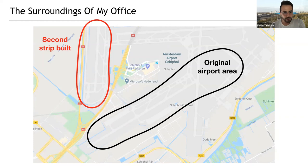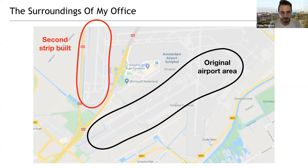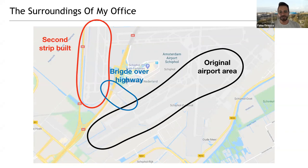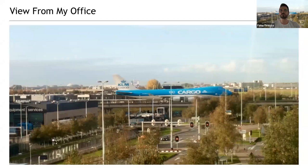So they built a second strip, highlighted in red. What's interesting is that between those two highlighted areas there is a highway called the A4. The highway was already there before the second strip was built. The solution they found to let planes go easily from one part to another was to build a bridge over the highway. So if you're driving your car on the highway, sometimes you're going to see these incredible planes — huge cargo planes — just meters above your car.